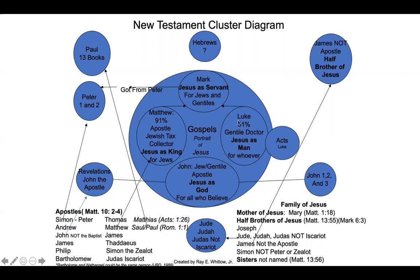We have circles here, and each circle represents a book in the New Testament. Now, if a circle is within a circle, or if a circle is big or small, it doesn't necessarily mean it's a better or a longer book. I'm simply putting them in circles to help you understand the organization of the New Testament.